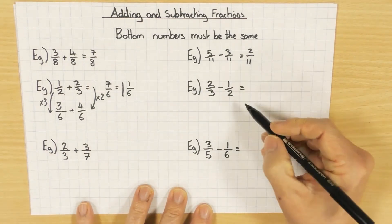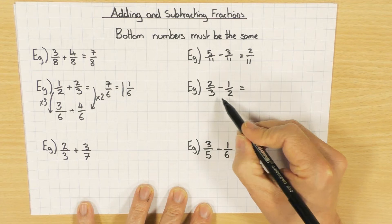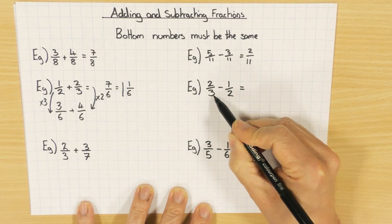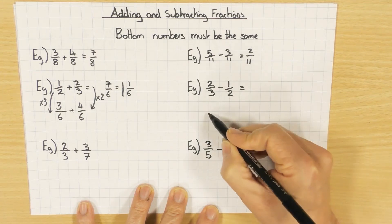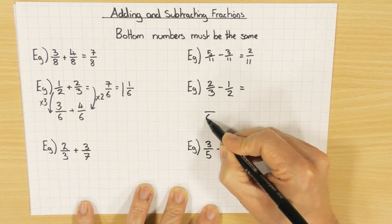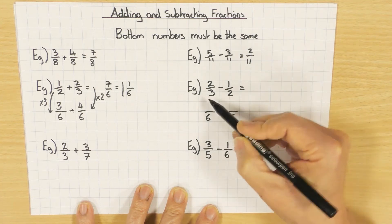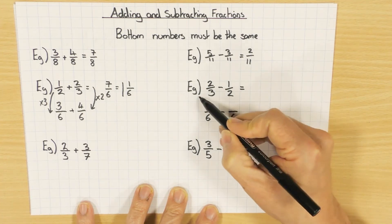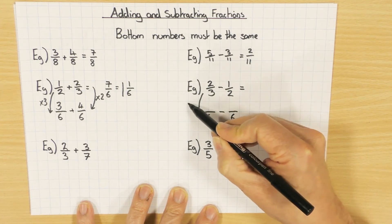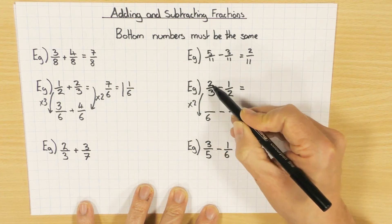Okay, onto this one. Again we can do the same thing. We're going to find the lowest common multiple, maybe, or any common multiple of two and three. We've done it a minute ago, so it's still six.